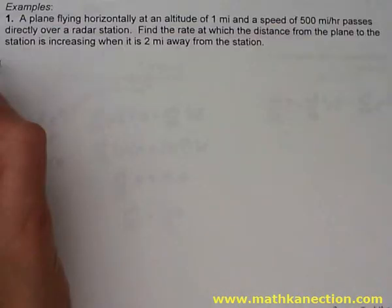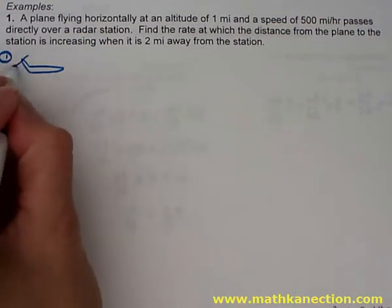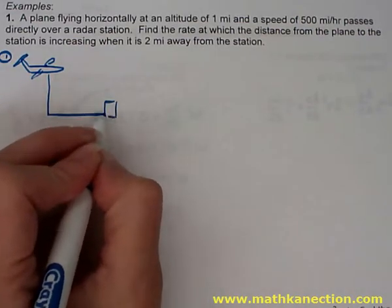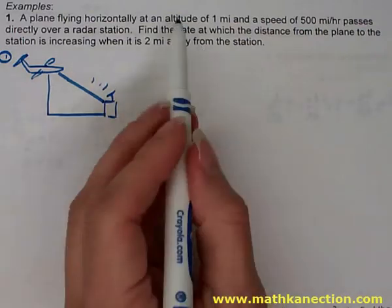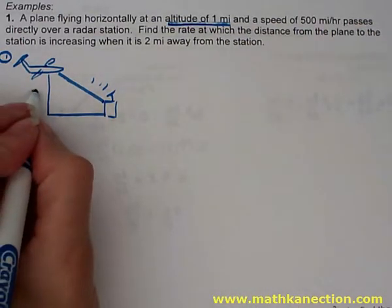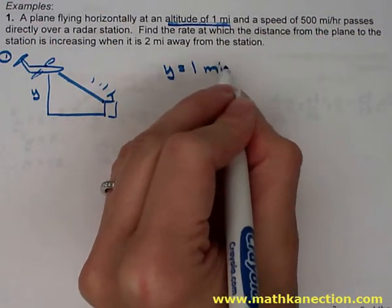So the first problem, we have a plane flying horizontally. So drawing a picture of a plane flying horizontally, passing over a radar station. So the plane is up in the air. We have a radar station down on the ground. So it forms a little right triangle. So the altitude given is one mile. So using y for altitude, writing down the given information, y is equal to one mile.